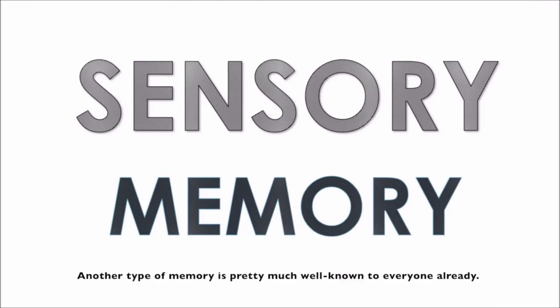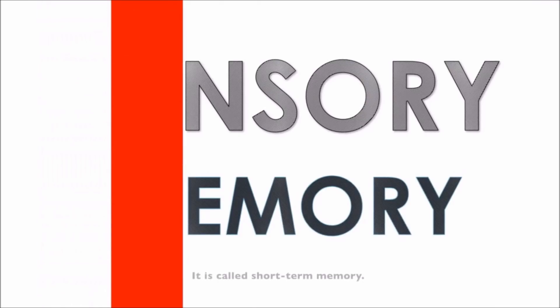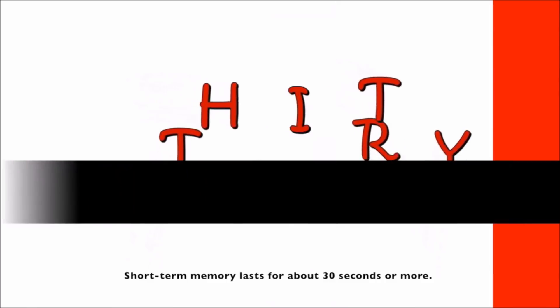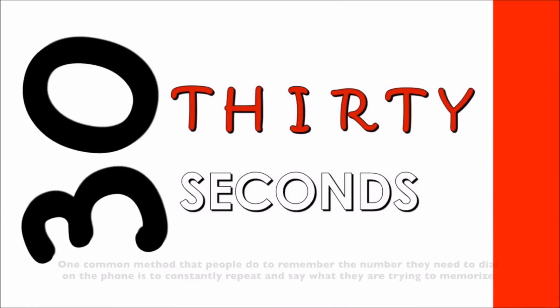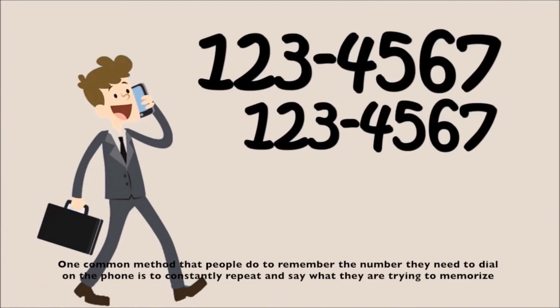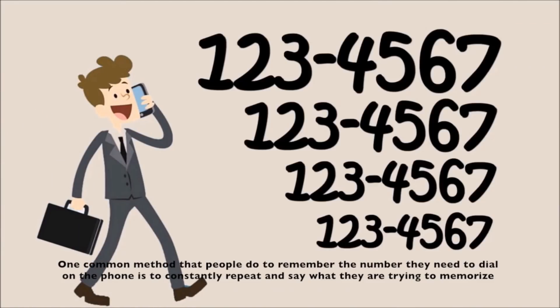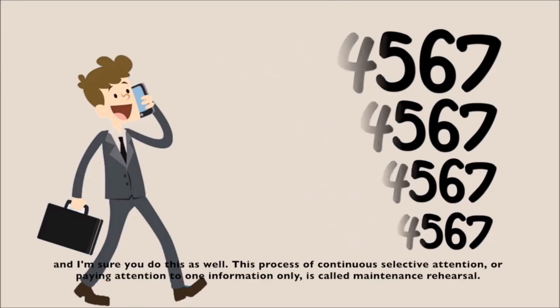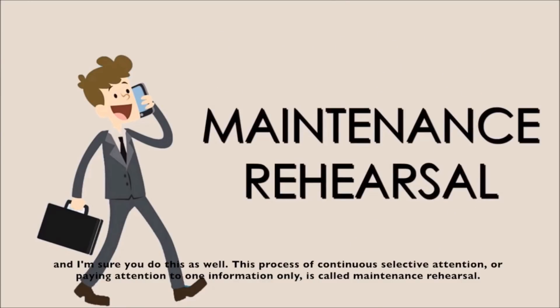Another type of memory is pretty much well-known to everyone: short-term memory. Short-term memory lasts for about 30 seconds or more. One common method people use to remember a number they need to dial is to constantly repeat what they are trying to memorize. This process of continuous selective attention — paying attention to one piece of information only — is called maintenance rehearsal.